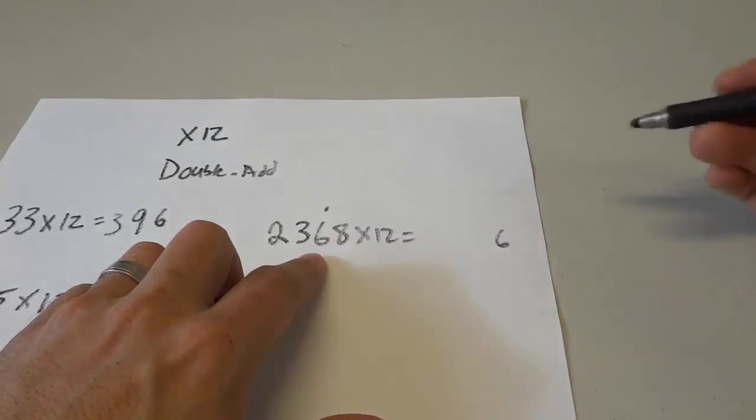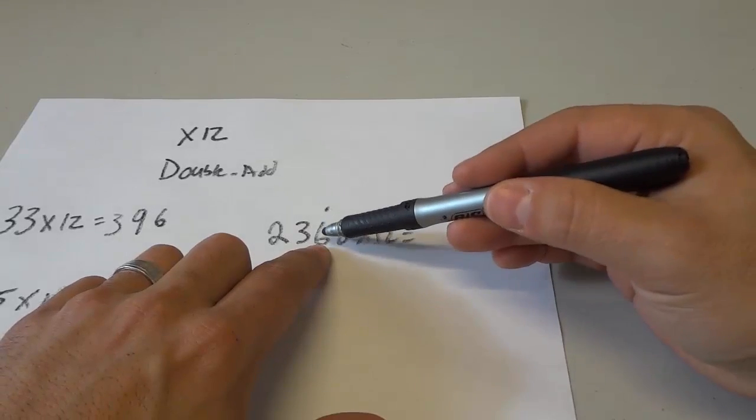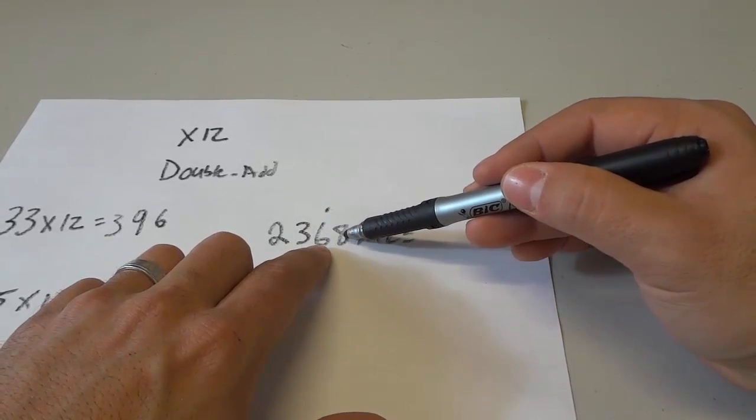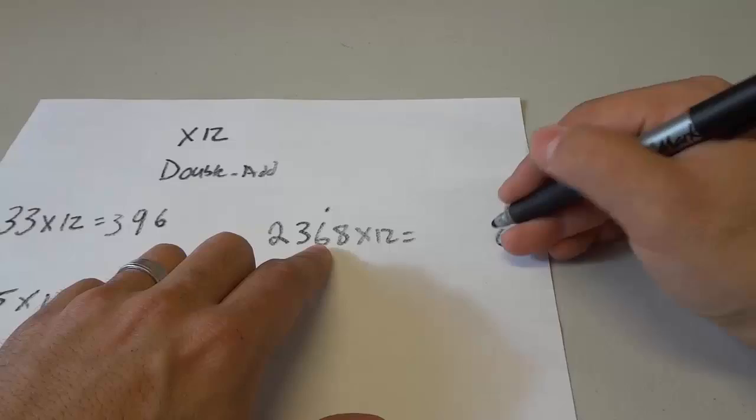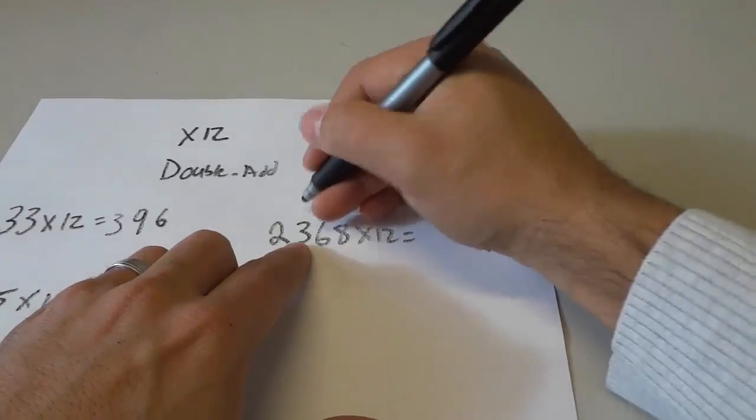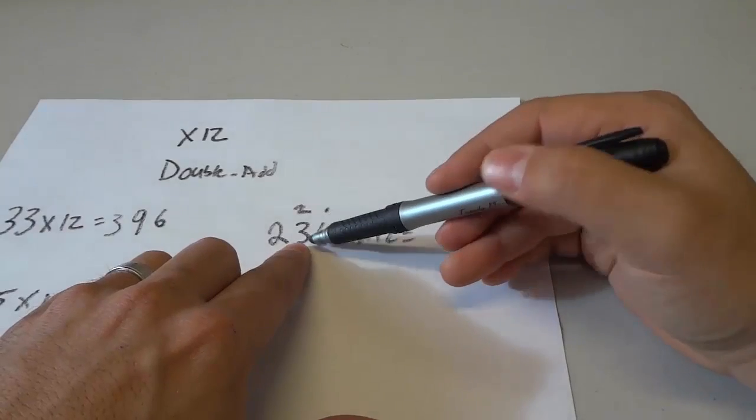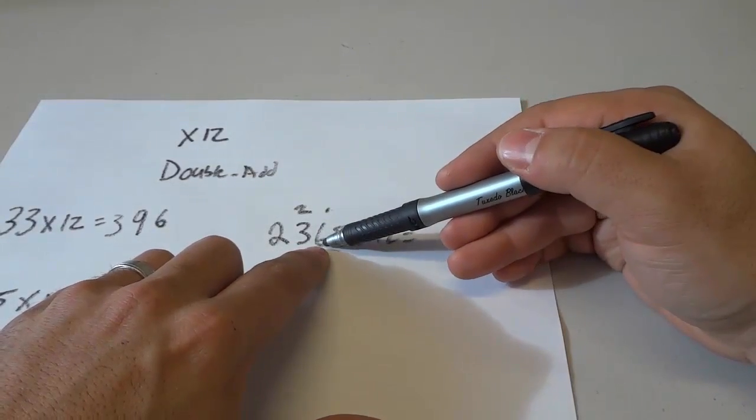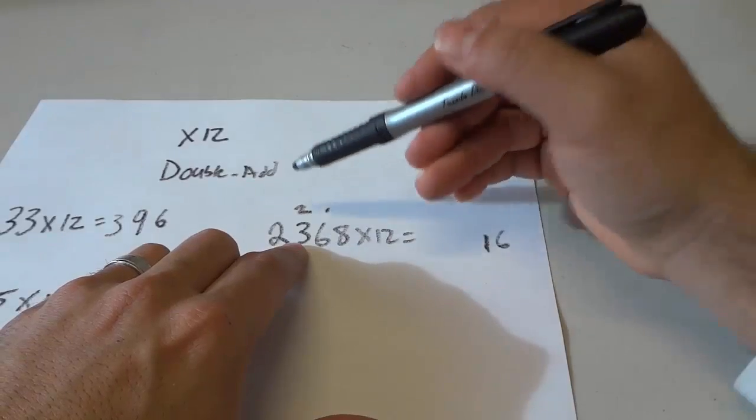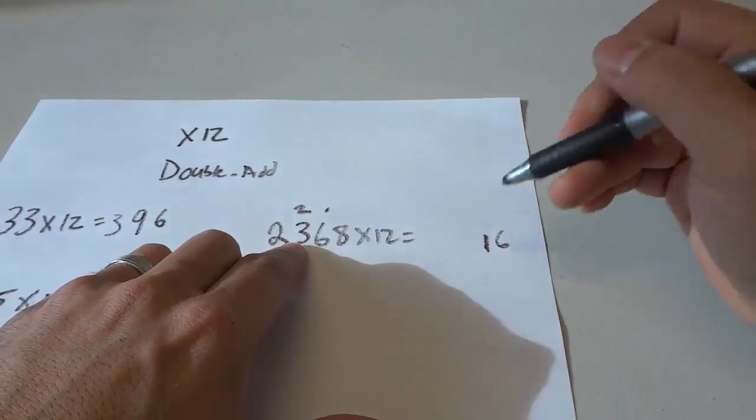Double 6, which gives us 12. Add it to the neighbor, which is 8. Brings us to 20. Add the 1. That's 21. We write down the 1 and we carry the 2 from 21. Sorry about that, once again with the marker. We double the 3, which gives us 6. We add the neighbor, which is 6. Brings us to 12. We add the 2 up here. Brings us to 14. We write down the 4. We carry the 1.